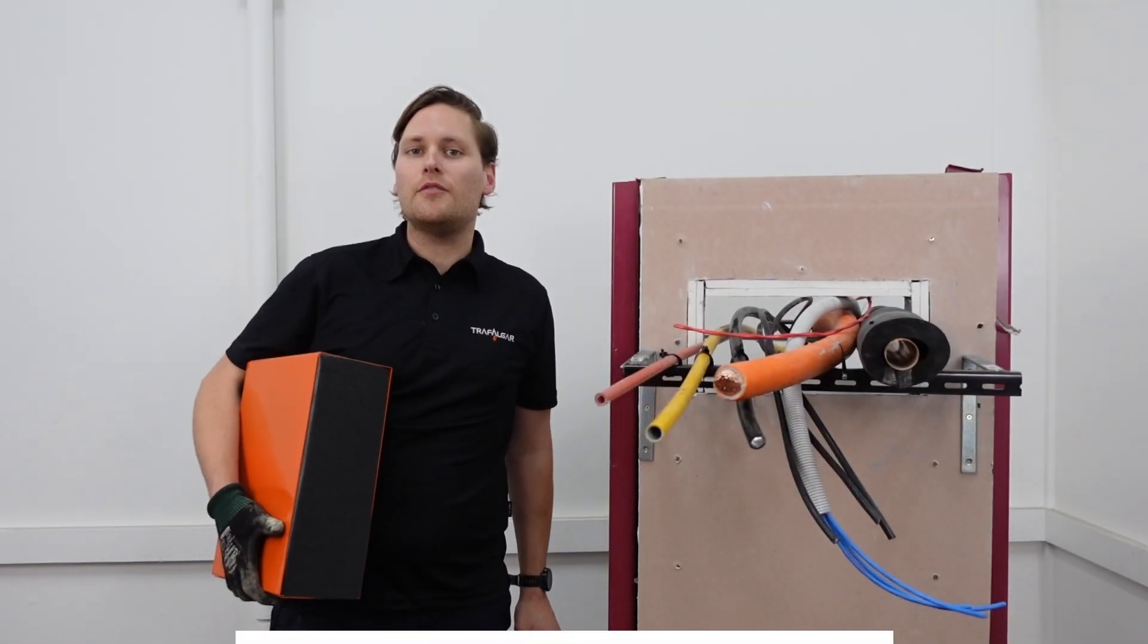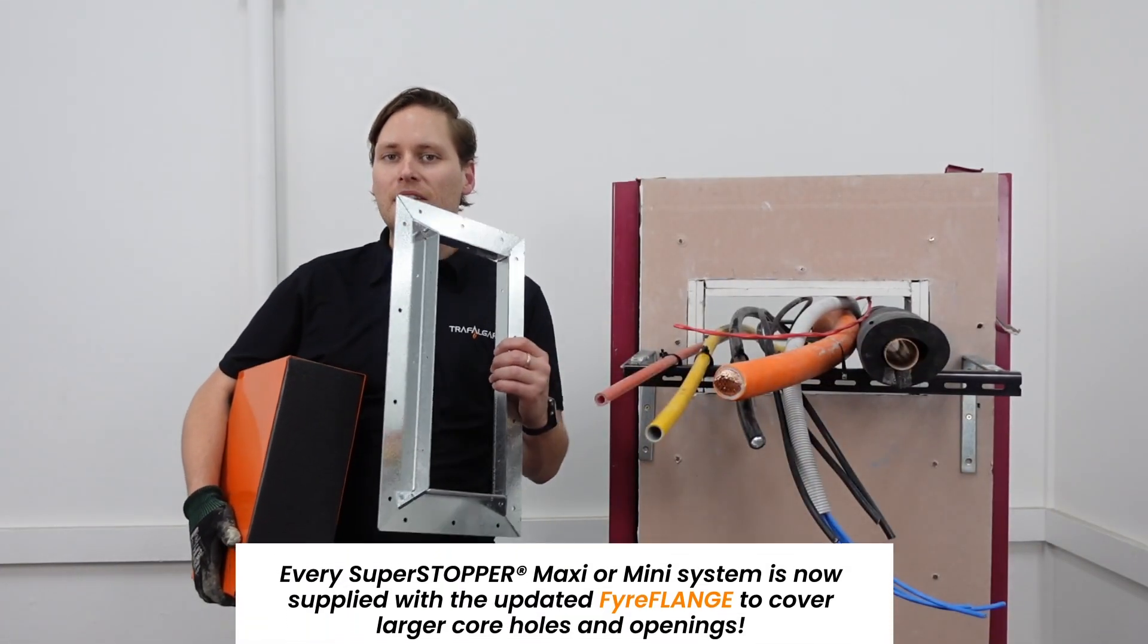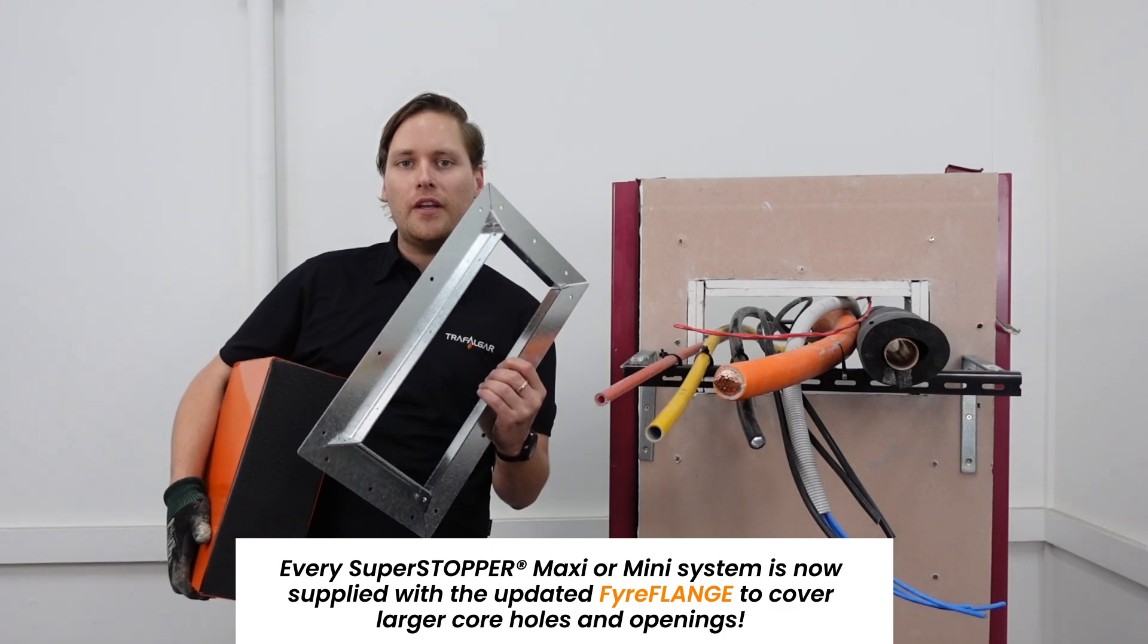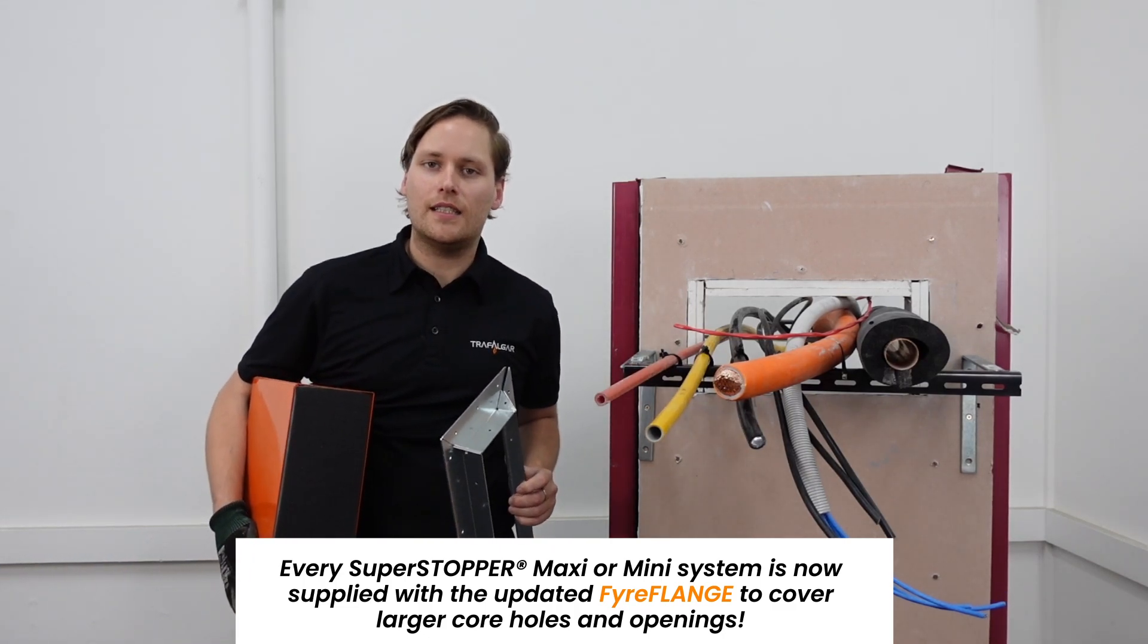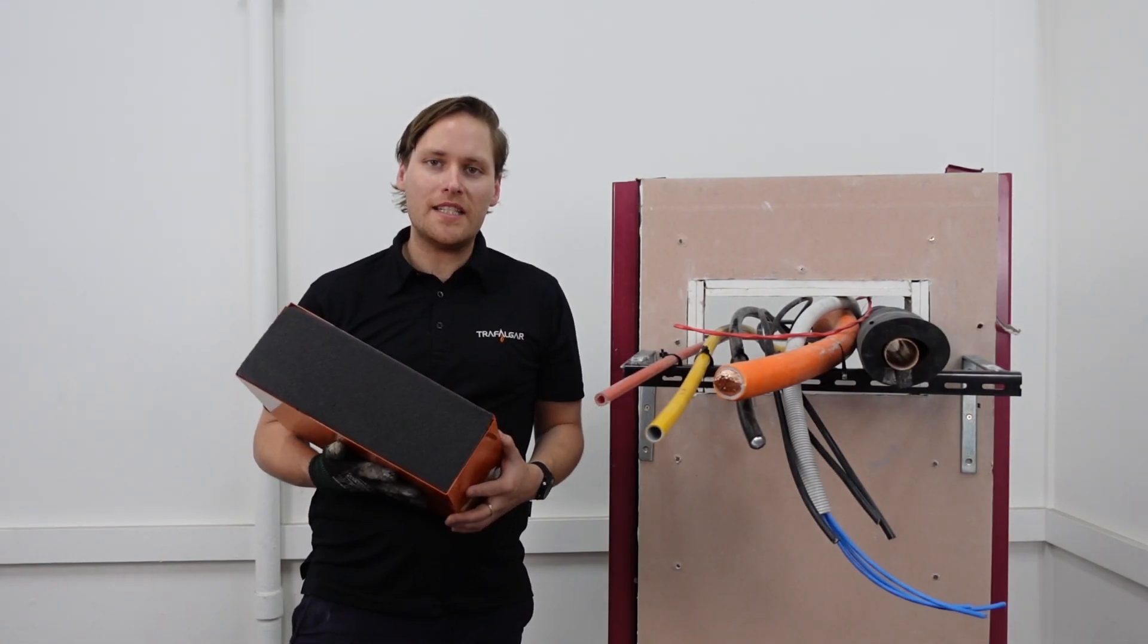The other component that's supplied with the Superstopper is these maxi flanges. These allow for retrofit so you can bolt these into walls, into floors and also into fire-rated ceilings. So let's get started.